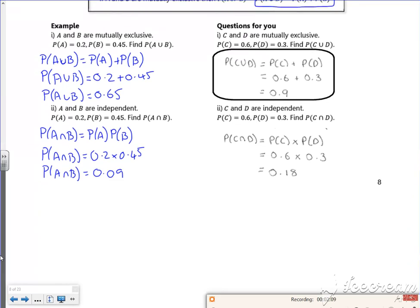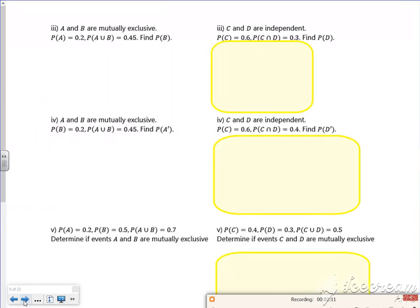So that page for you, I've got another example in mind. Right, so mutually exclusive, so we know we can add them together. So A or B is A plus B. So 0.45 is 0.2 plus B. So 0.25 is B.